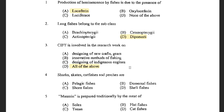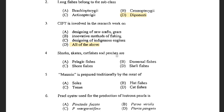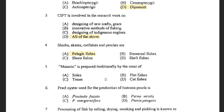Next question: Shark, Skates, Catfishes, Perches are — options are Pelagic Fishes, Demersal Fishes, Shore Fishes, and Shell Fishes. The answer is Pelagic Fishes, because pelagic fishes are fish which live in the pelagic region or upper region. Demersal fishes are fish which live in the demersal region, or the bottom region, or just above the bottom region.